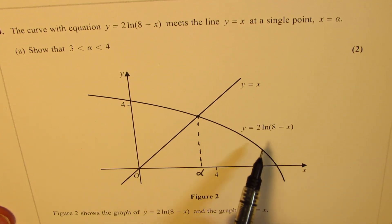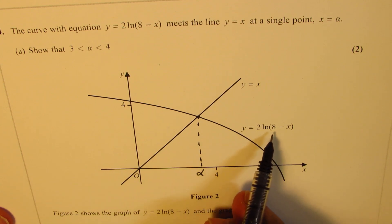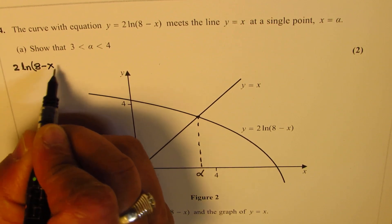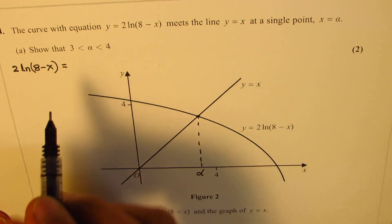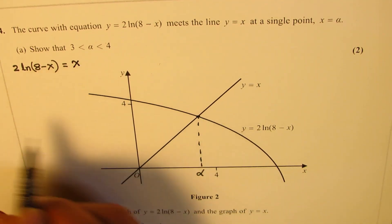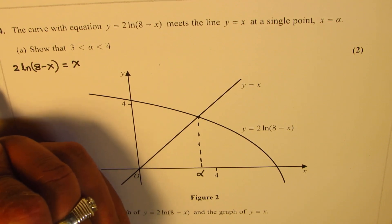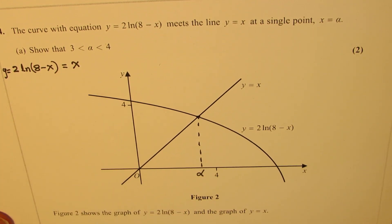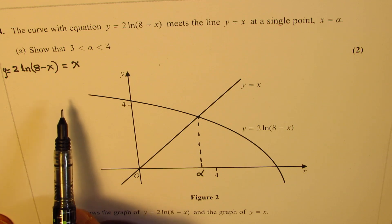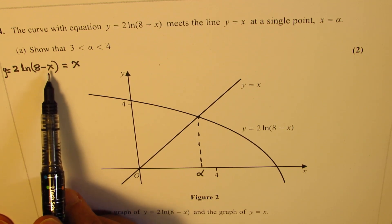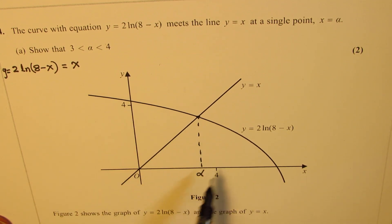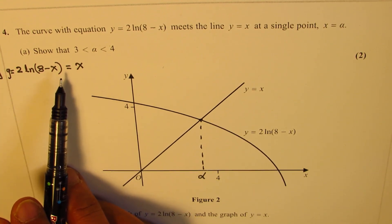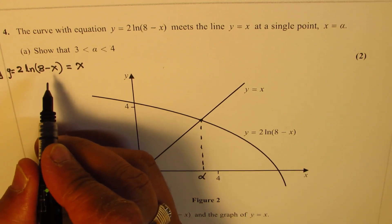What we are given here is 2 ln(8 - x), and that should be equal to y equals x. So we say y equals 2 ln(8 - x) equals x. Now what we can do is take x to the left side and then substitute the value of 4 and 3 to see whether the sign changes or not.